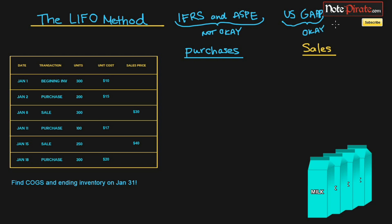You might be wondering why we're talking about LIFO, since all public companies have to abide by IFRS standards. Well, it used to be a very important part of inventory expensing and it's part of accounting theory. I also have a large American audience, and since LIFO is okay under US GAAP, I thought I would cover it. We're going to go through a problem and find the cost of goods sold and ending inventory on January 31st.